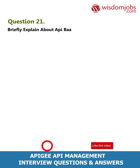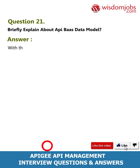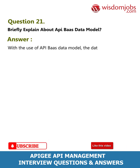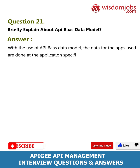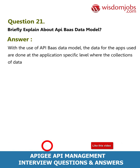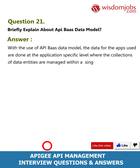Question 21: Briefly explain the API BaaS data model. Answer: With the use of the API BaaS data model, the data for the apps is managed at the application-specific level, where collections of data entities are managed within a single organization.